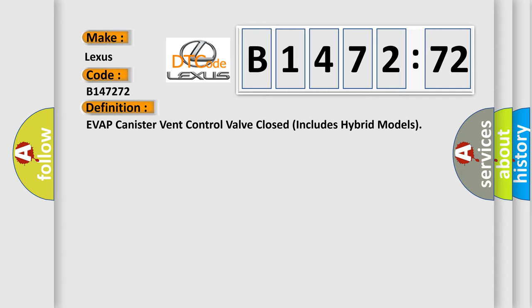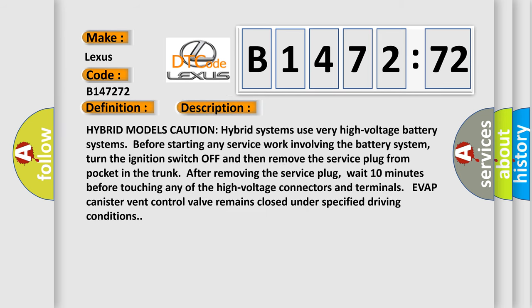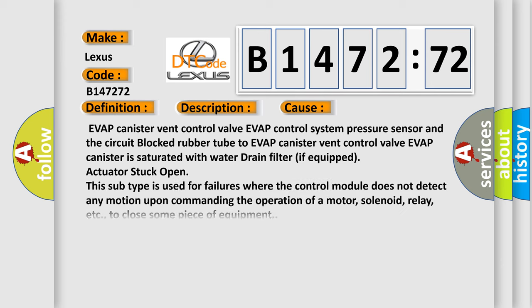The basic definition is: EVAP canister vent control valve closed, includes hybrid models. And now this is a short description of this DTC code. Hybrid models caution: hybrid systems use very high voltage battery systems. Before starting any service work involving the battery system, turn the ignition switch off and then remove the service plug from pocket in the trunk. After removing the service plug, wait 10 minutes before touching any of the high voltage connectors and terminals. EVAP canister vent control valve remains closed under specified driving conditions.